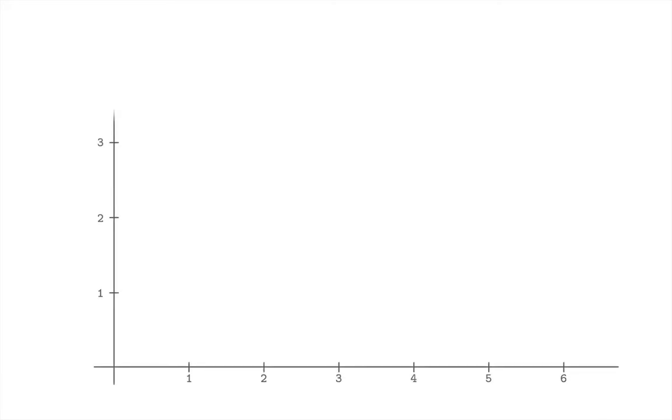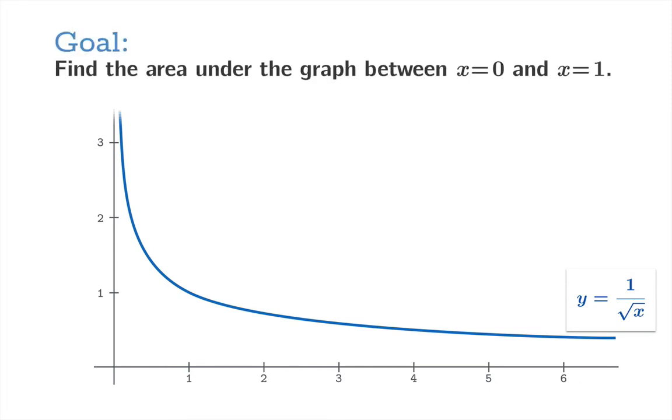So we'll start with a concrete example. Suppose we have the function 1 over the square root of x and our goal is to find the area under the graph between x equals 0 and x equals 1. So we would ordinarily just write out the integral from 0 to 1 of 1 over root x dx but there's a problem here.